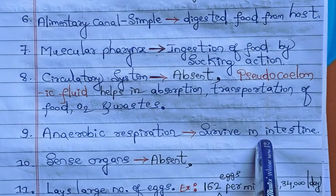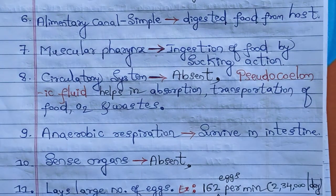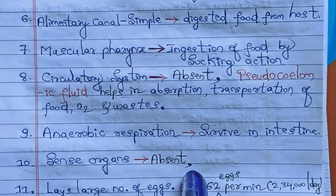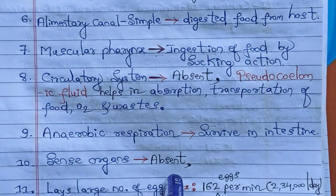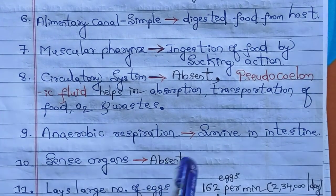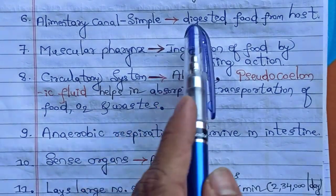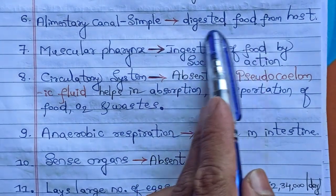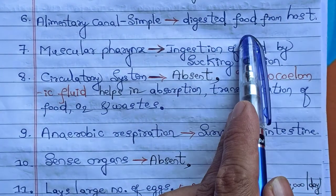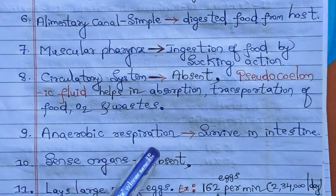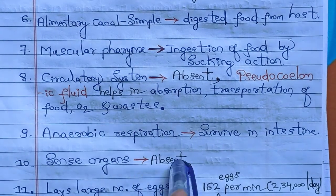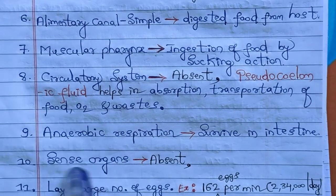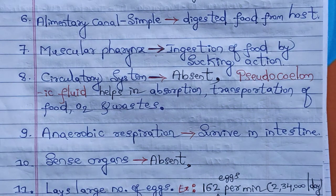Sense organs are entirely absent in Ascaris because they are not needed — it gets already digested food from the host and is protected from predators inside the intestine. Therefore, there is no need for sense organs, and they are entirely absent.